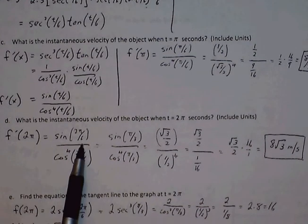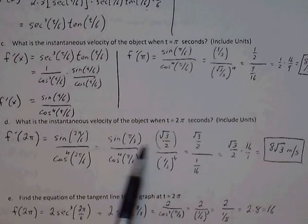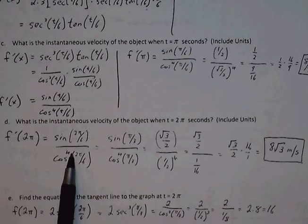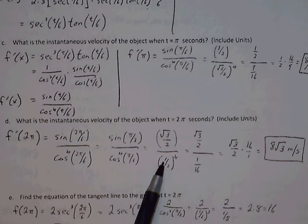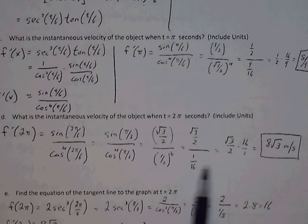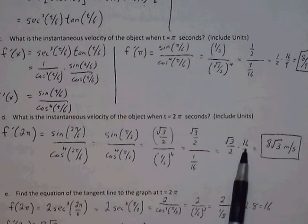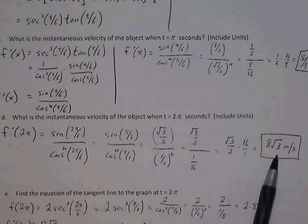So sine of 2 pi over 6 is just going to be sine of pi over 3, which is root 3 over 2. Cosine of 2 pi over 6 is the same thing as cosine of pi over 3. Cosine of pi over 3 is 1 half. 1 half to the 4th is 1 over 16. Multiply by the reciprocal. Root 3 over 2 times 16 is 8 root 3 meters per second.